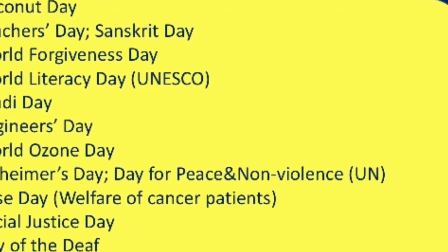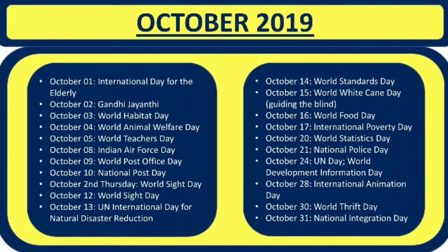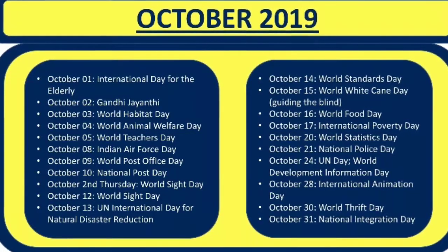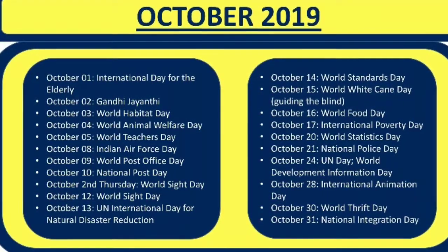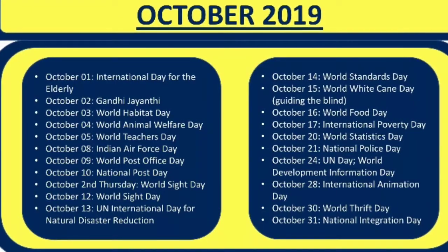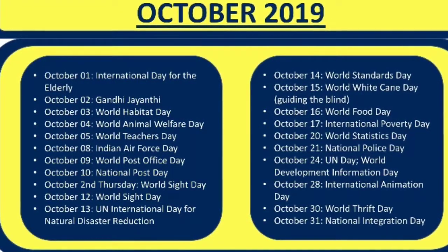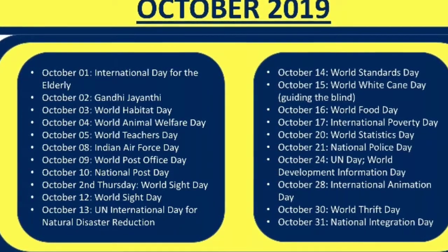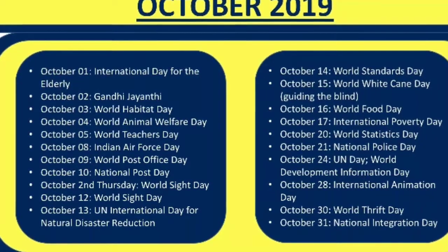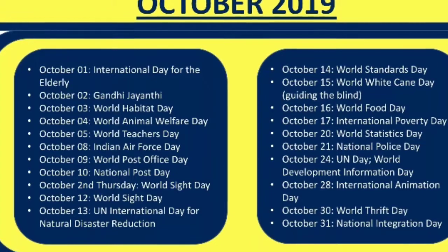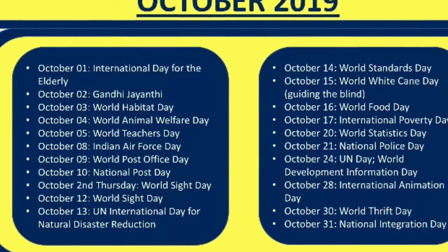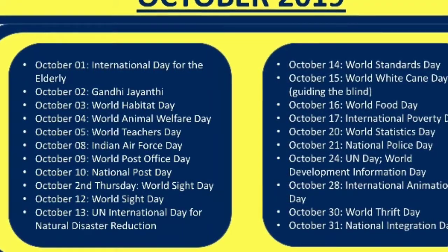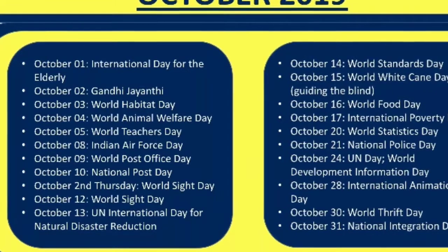October 2019: 1st October: International Day of the Elderly. 2nd October: Gandhi Jayanti. 3rd October: World Habitat Day. 4th October: World Animal Welfare Day. 5th October: World Teachers' Day. 8th October: Indian Air Force Day. 9th October: World Post Office Day. 10th October: National Post Day. 12th October: World Sight Day.